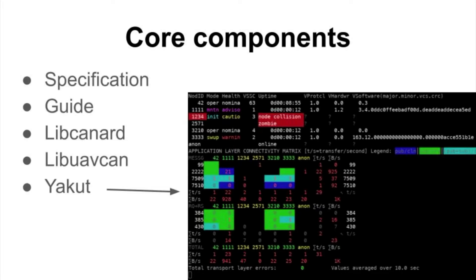The core components that the UAVCAN ecosystem rests upon include the formal specification, a comprehensive usage guide for newcomers, libraries for embedded systems in C and C++, with a Rust implementation also in progress, and a set of development tools. The screenshot on the right features the YAKUT command line tool designed for diagnostics and debugging of UAVCAN networks.